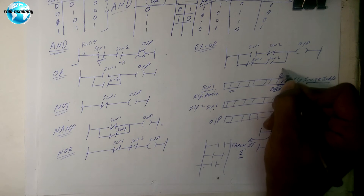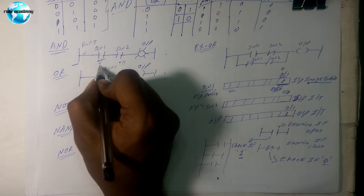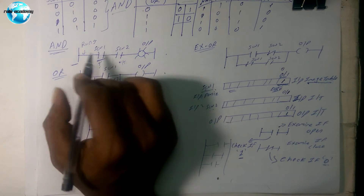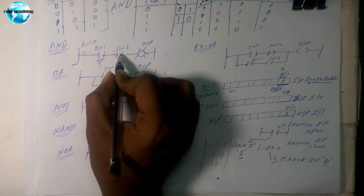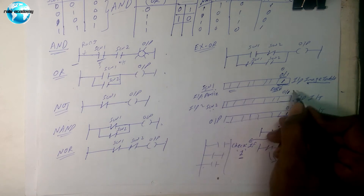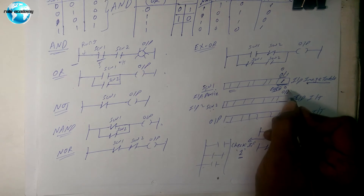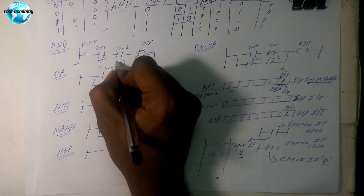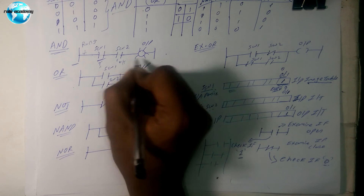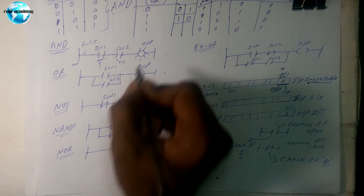Checking for one but the switch is not pressed means zero — so it will show false. If switch two is also not pressed, that is also zero, also false. False AND false gives false, so the output will not run.